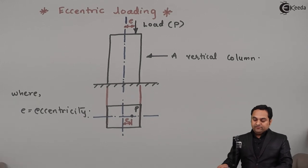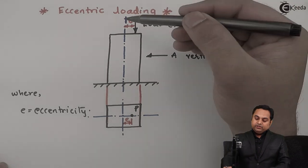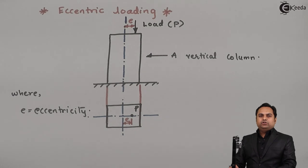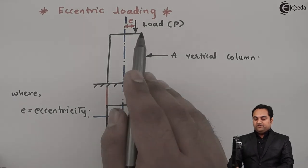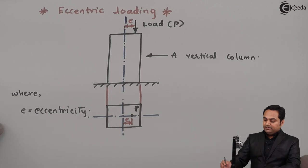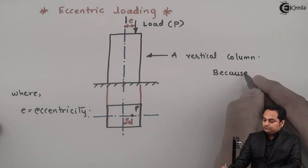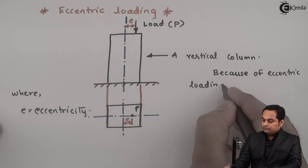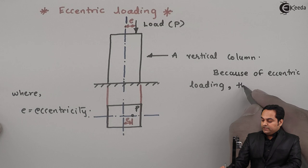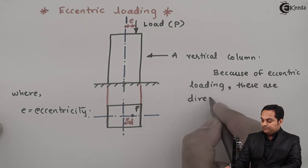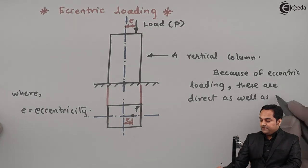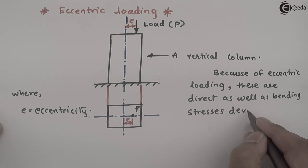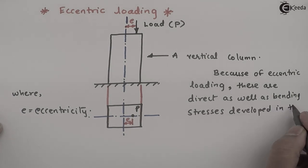If the load would have been passing through the axis, then it is called as axial loading. But since it is away from the axis, it is called as eccentric loading. And because of eccentric loading, there are direct as well as bending stresses developed in the column.